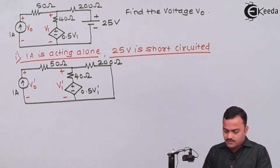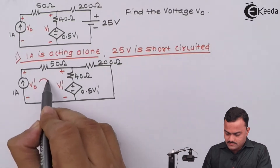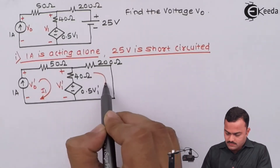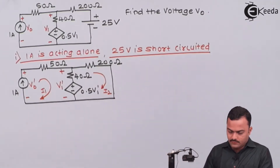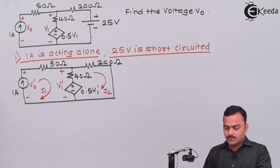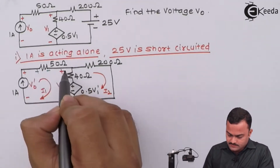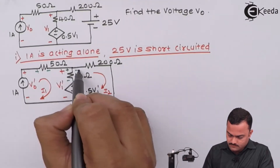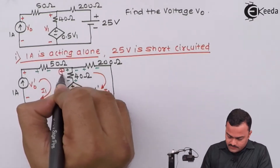We will apply mesh analysis to this problem. There are two meshes having currents i1 and i2. The voltage drops across all the resistors based on the current direction will be marked accordingly. Let's encircle the polarity given to avoid confusion.